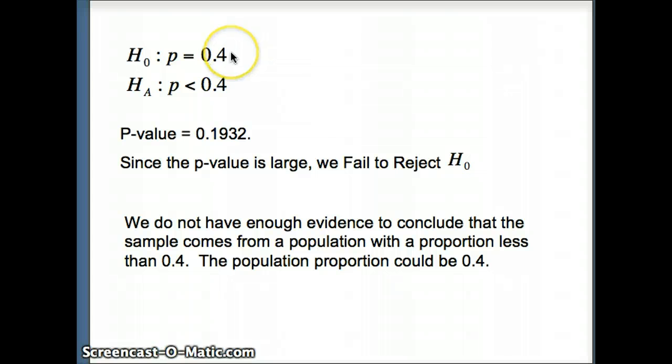h-naught may be true. If we fail to reject h-naught, there's still a possibility that h-naught is true. So we conclude that we do not have enough evidence to conclude that the sample comes from a population with a proportion less than 0.4. The population proportion could be 0.4. Not enough evidence to say that the overall population proportion is less than 0.4. It might be 0.4.